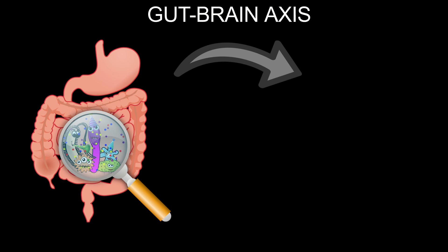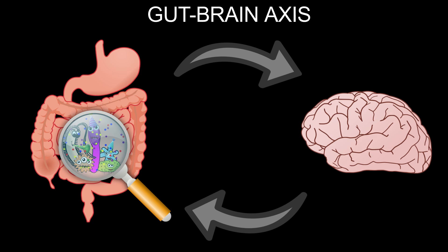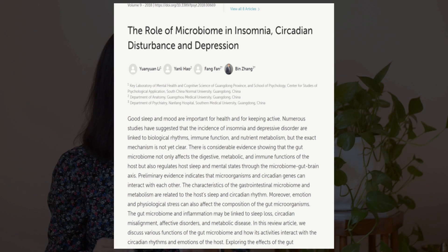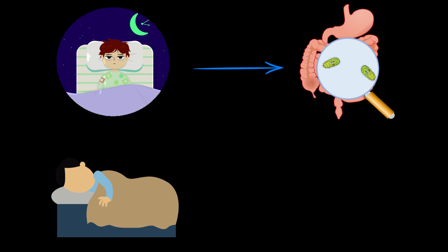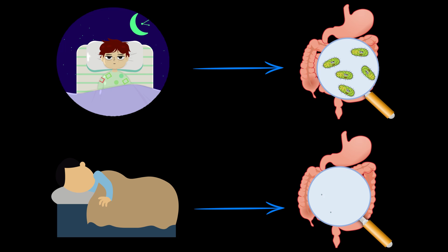Just like there is a gut-skin axis, there also exists a gut-brain axis, which is a bi-directional channel via which our gut microbiota communicates with our brain and vice versa. In a scientific study, the gut microbiota of people with and without insomnia or poor sleep quality was compared, and a clear difference in the composition of gut microbiota between these two groups was found. People with insomnia had fewer good bacteria like lactobacilli and higher numbers of undesirable strains of bacteria in the gut.